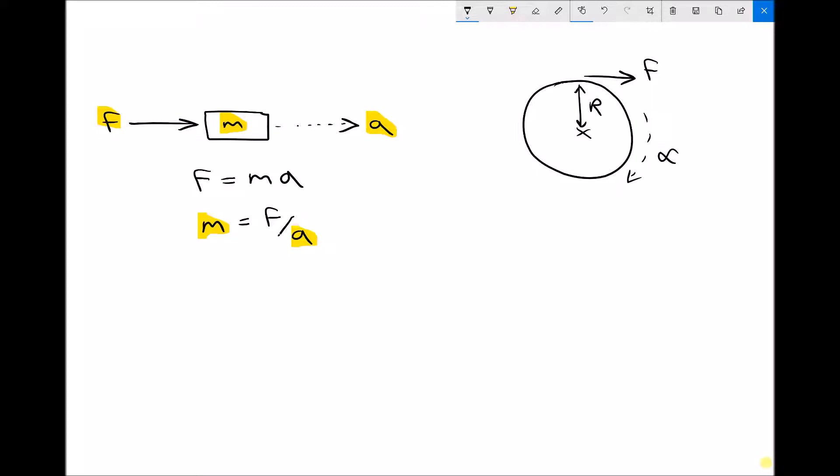Now, that force is going to cause a torque and our equation for torque is force times distance. In this case, it's going to be force times radius because our force is a distance r from the pivot. Now, the best way to think of this is if we want to create more torque, we can either increase the force or we can increase the distance from the pivot.